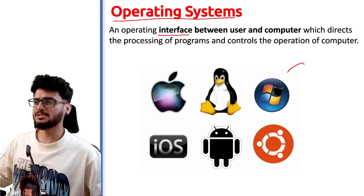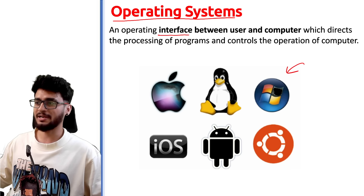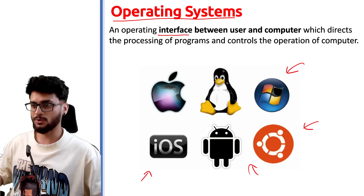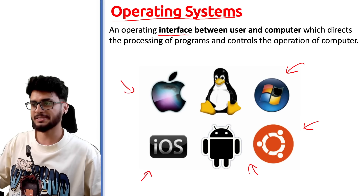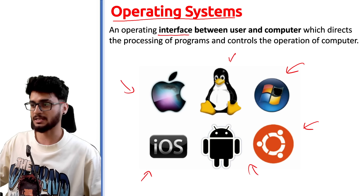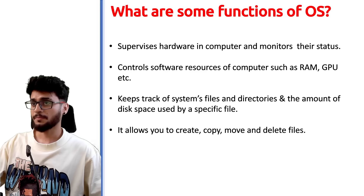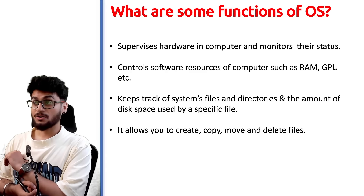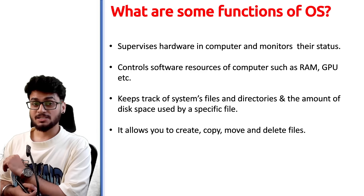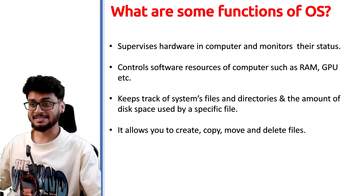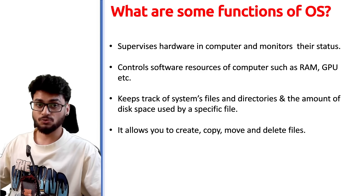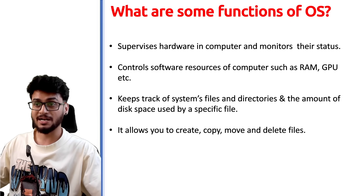For example, if you want to give a command to your computer — say you want to play music — you cannot directly tell the hardware to do that; you need to tell the operating system. It controls all the programs, all the software, and all the applications within your computer. There are many different types of operating systems such as Windows, Ubuntu, Android, iOS, Mac OS, and Linux.